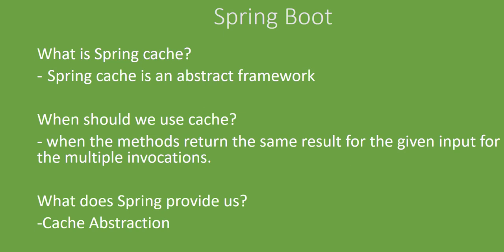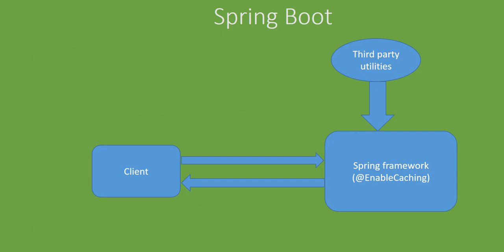When caching is enabled for a particular class and a method with caching behavior is invoked, it checks whether the method has already been executed for the given arguments. If true, the cached result is returned without executing the method. If false, the method is executed and the result is stored, so from that point on the cached result is returned.